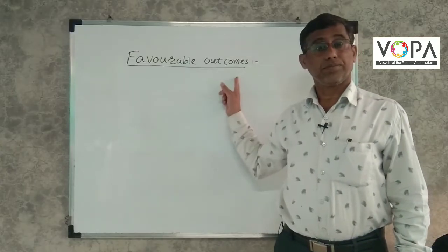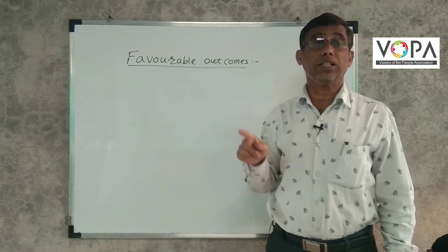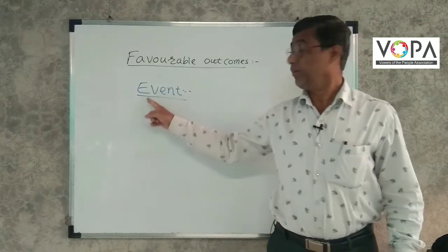Favorable outcomes. The outcomes satisfying a particular condition are called favorable outcomes. Event. The set of favorable outcomes of a given sample space is called an event.